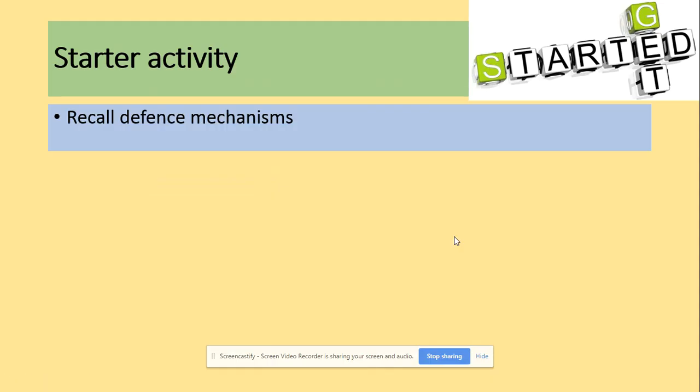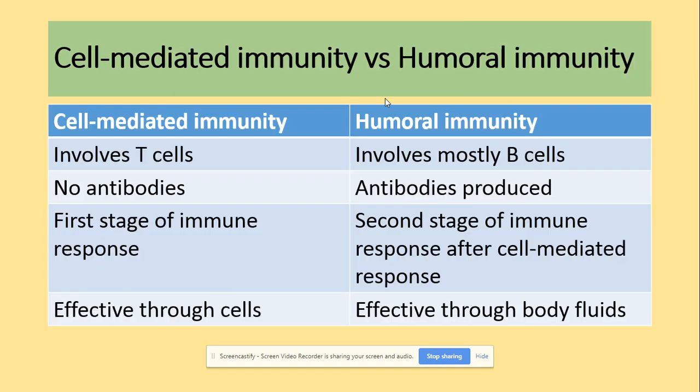Recall the different mechanisms — we were looking at specific and non-specific mechanisms in our previous video. Today we are starting with the specific mechanisms, looking at T cells, and the main differences between cell-mediated immunity that involves T cells and humoral immunity that involves B cells.